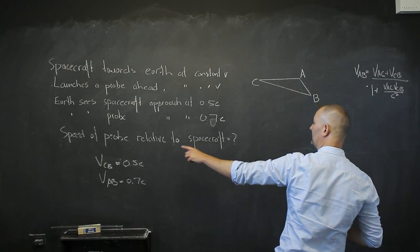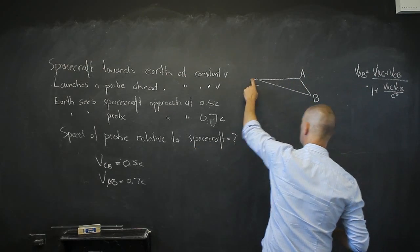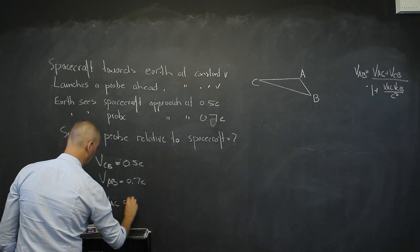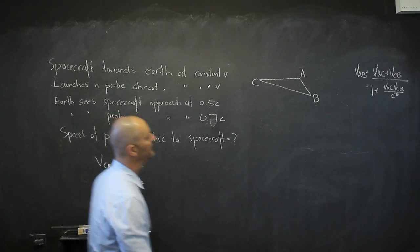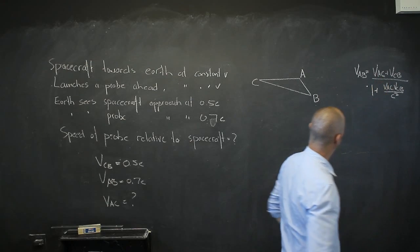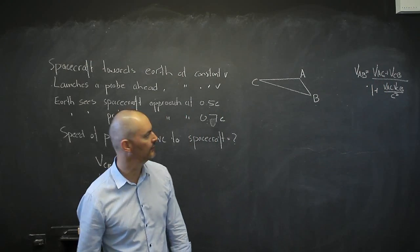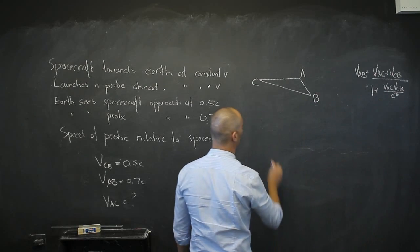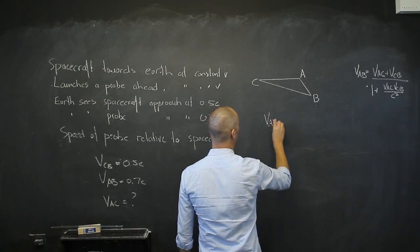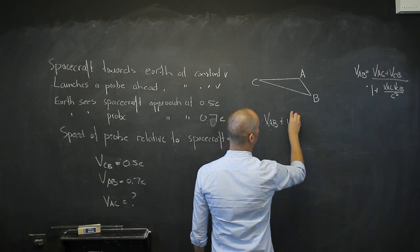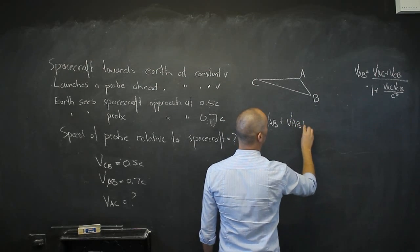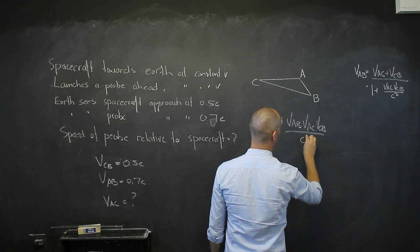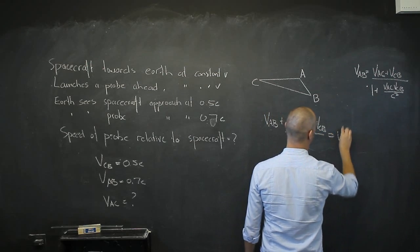We want to know the speed of the probe relative to the spacecraft, so we want VAC. VAC appears in two places on the right-hand side of our equation, so we have to do some algebra. If we multiply both sides by the denominator, we get VAB, plus VAB·VAC·VCB divided by c squared, and that equals VAC plus VCB.